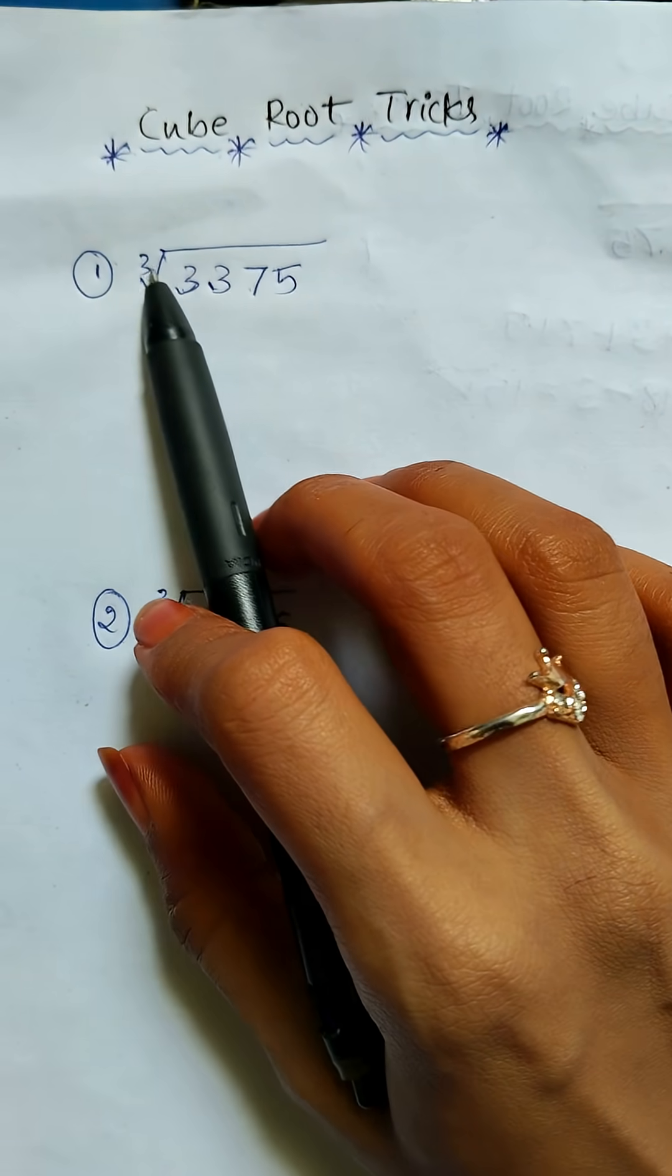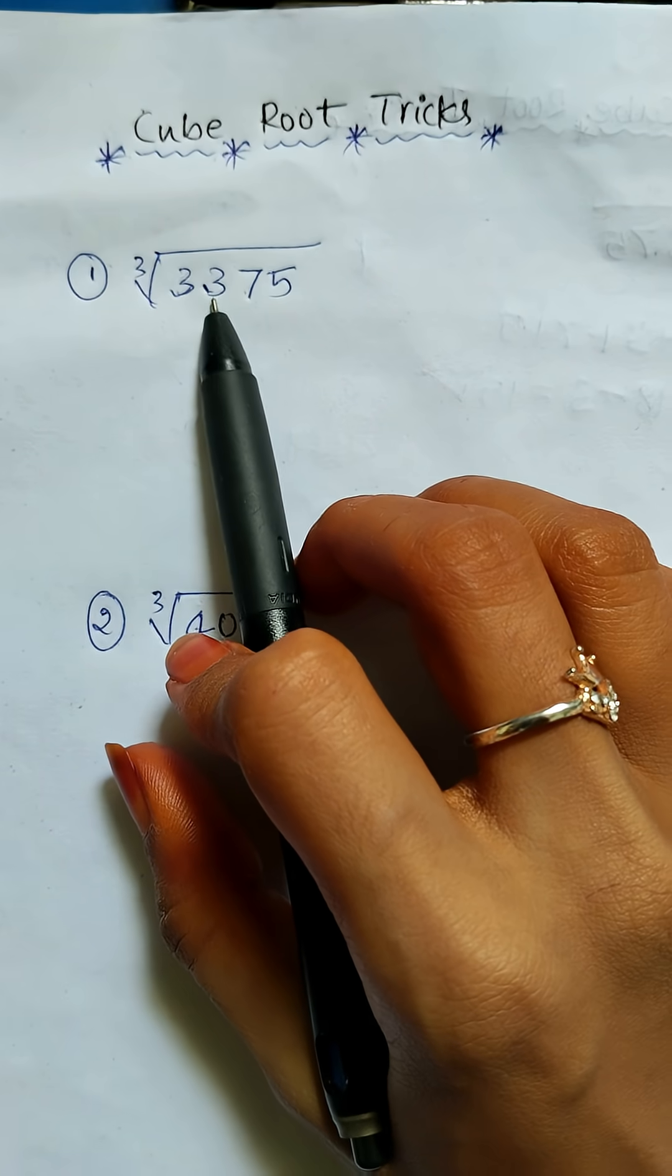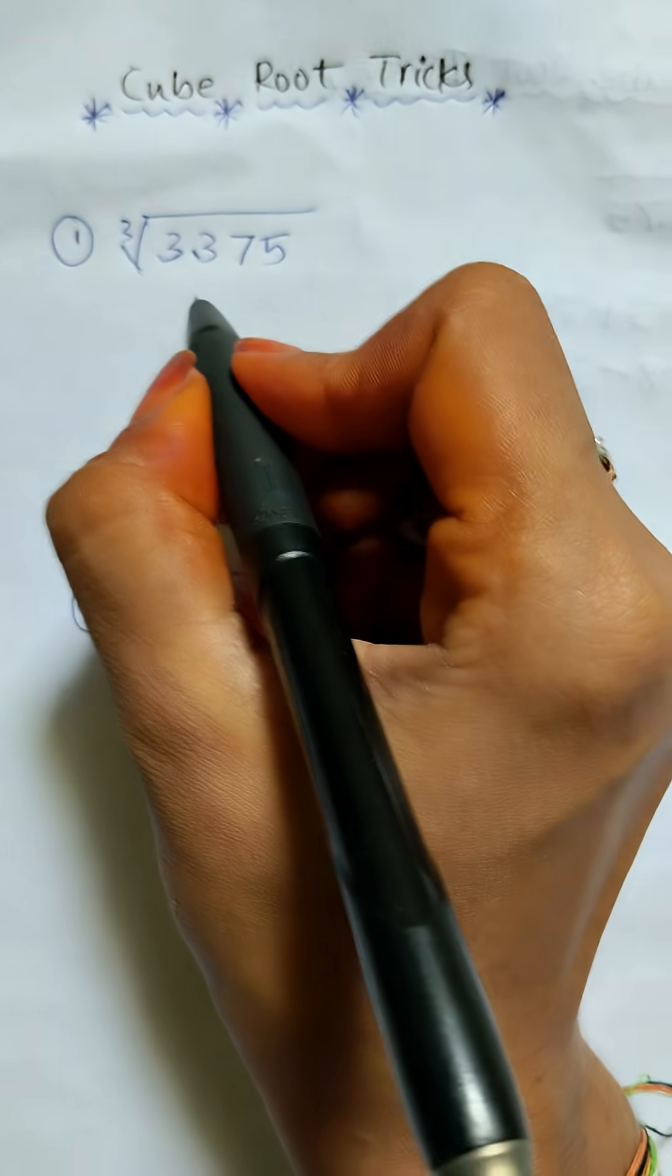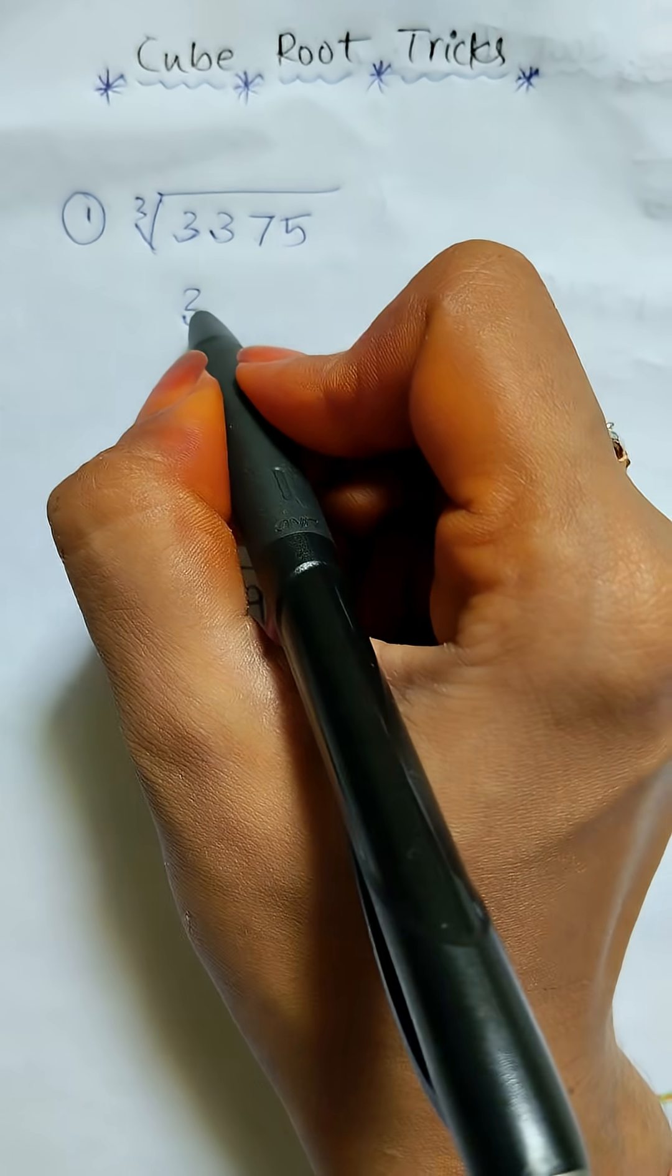example—that is cube root of 3375. Here you can solve this very easily by writing 3 + 3 + 7 + 5.